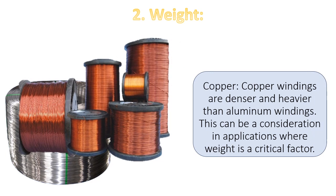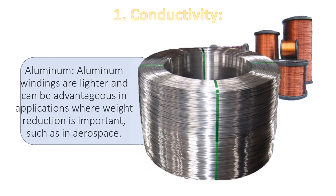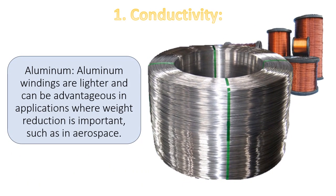2. Weight. Copper windings are denser and heavier than aluminum windings. This can be a consideration in applications where weight is a critical factor. Aluminum windings are lighter and can be advantageous in applications where weight reduction is important, such as in aerospace.